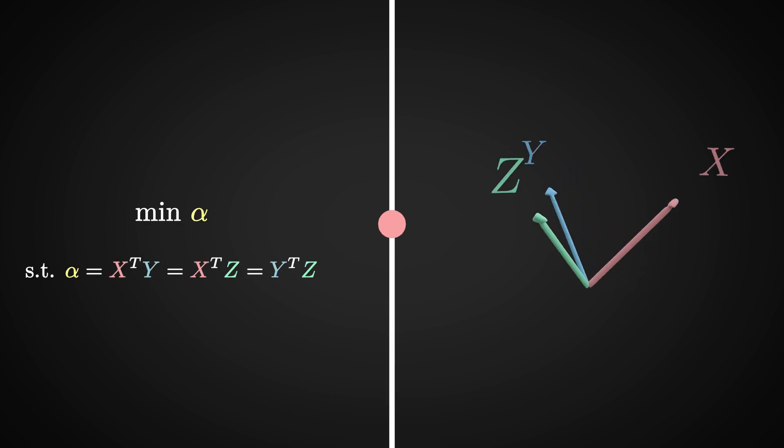In the previous video, we defined what it means for a symmetric matrix to be positive semi-definite. In this video, as promised, we will use this definition to solve the problem of finding the smallest possible inner product between three unit vectors.